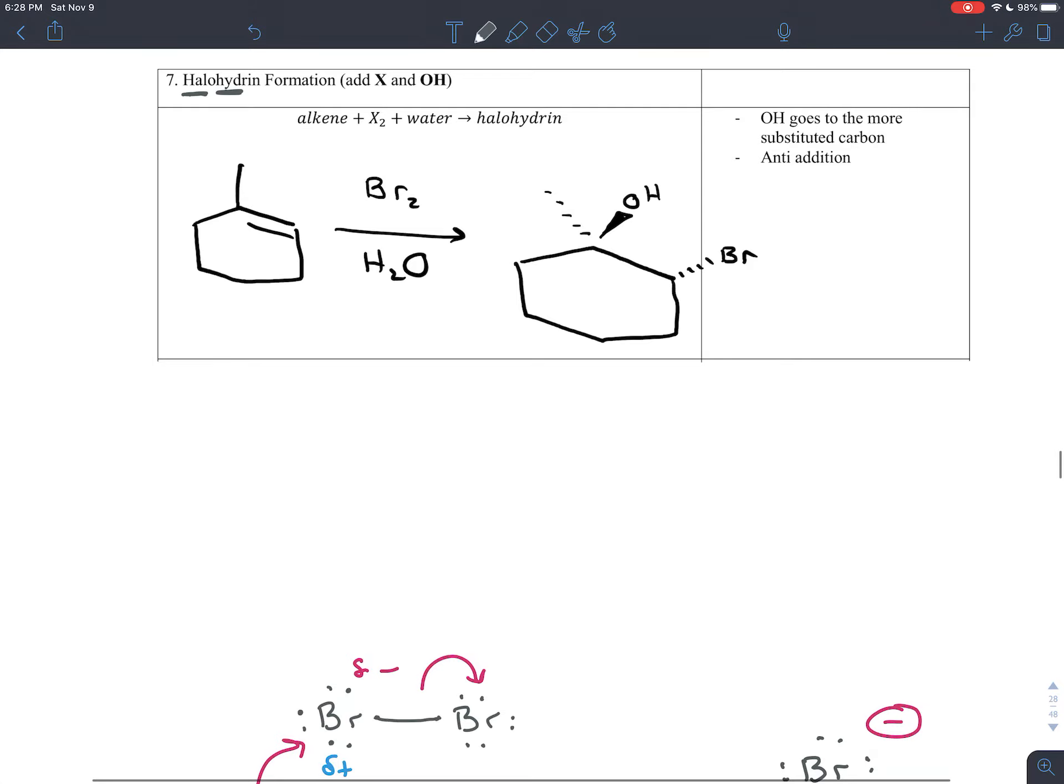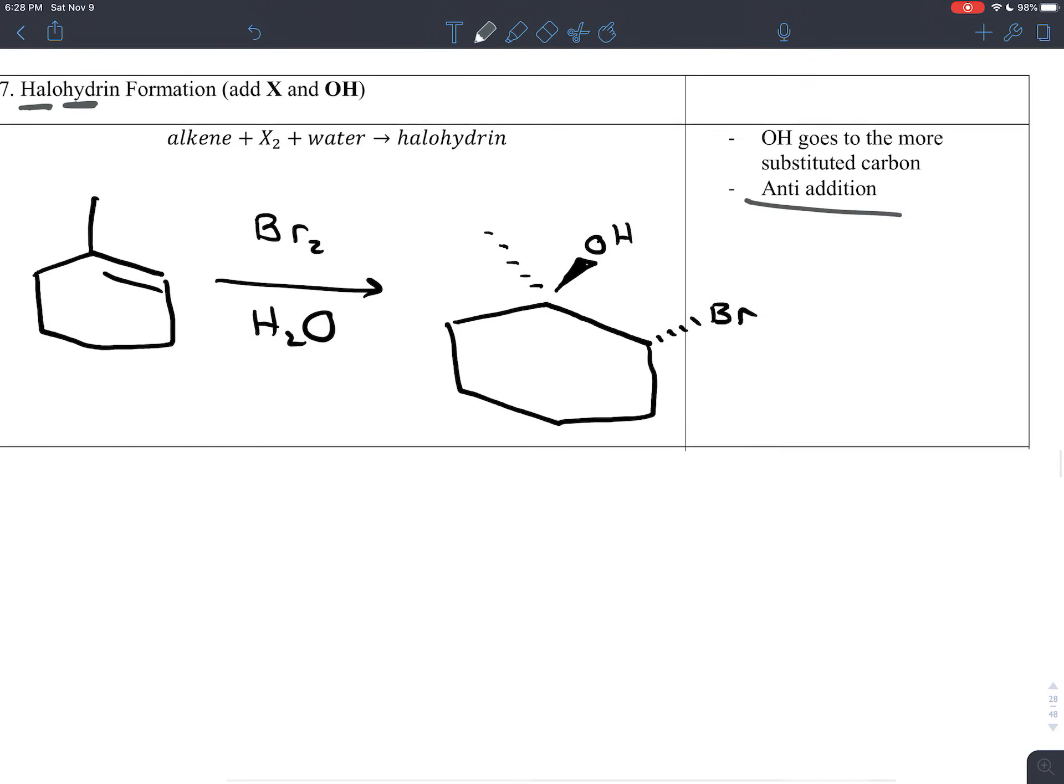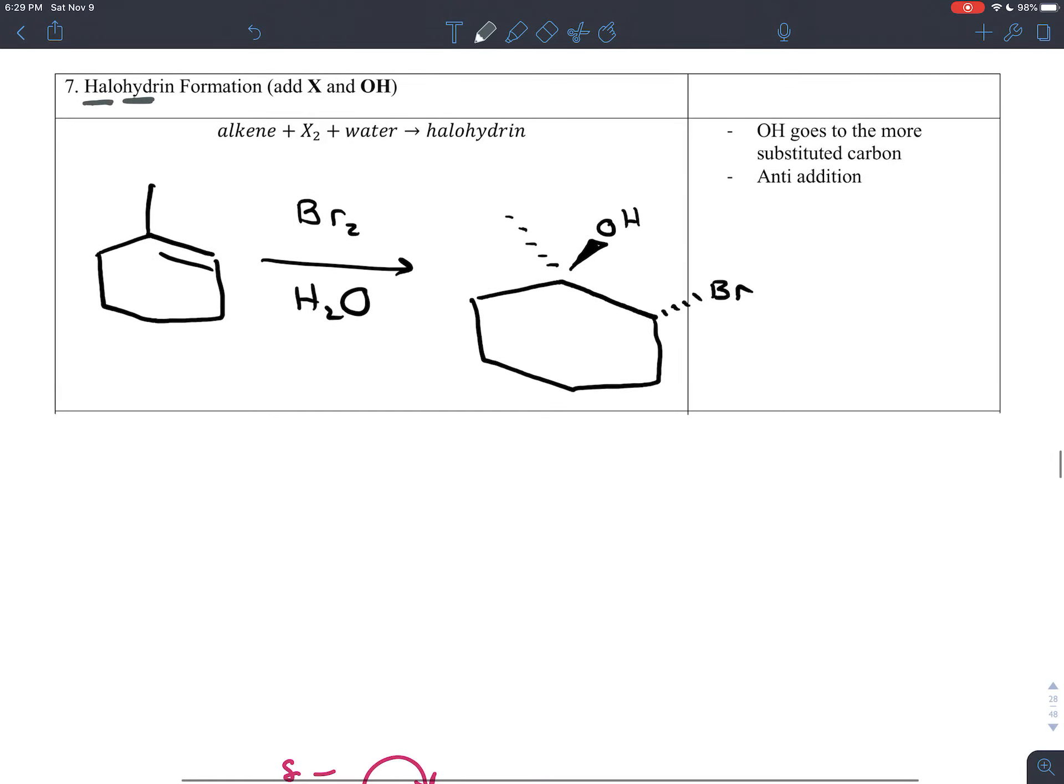So that's halohydrin formation and there are a couple details here. The first detail is that this is anti-addition. Whatever side of the double bond the bromine adds on, the OH is going to add on the other side. The second thing to note is that the OH will always go to the carbon that is more substituted, the carbon bonded to more carbons.